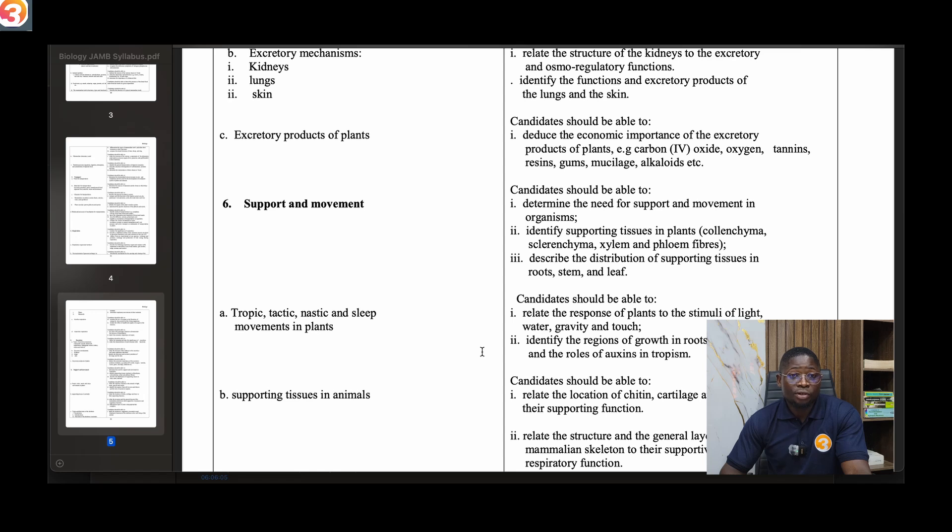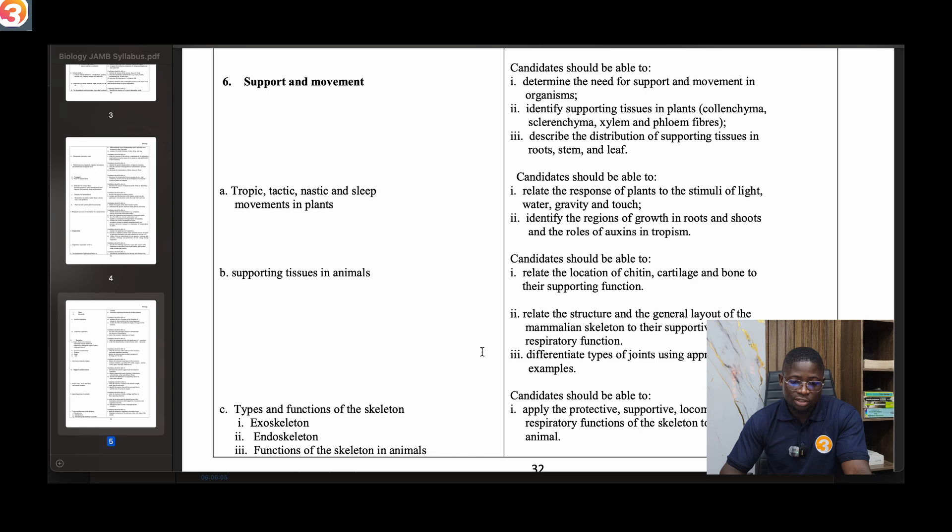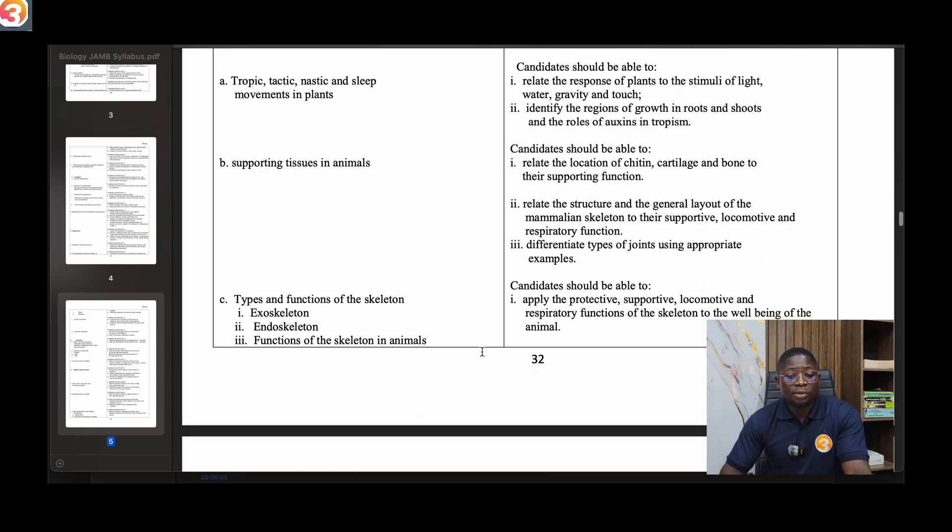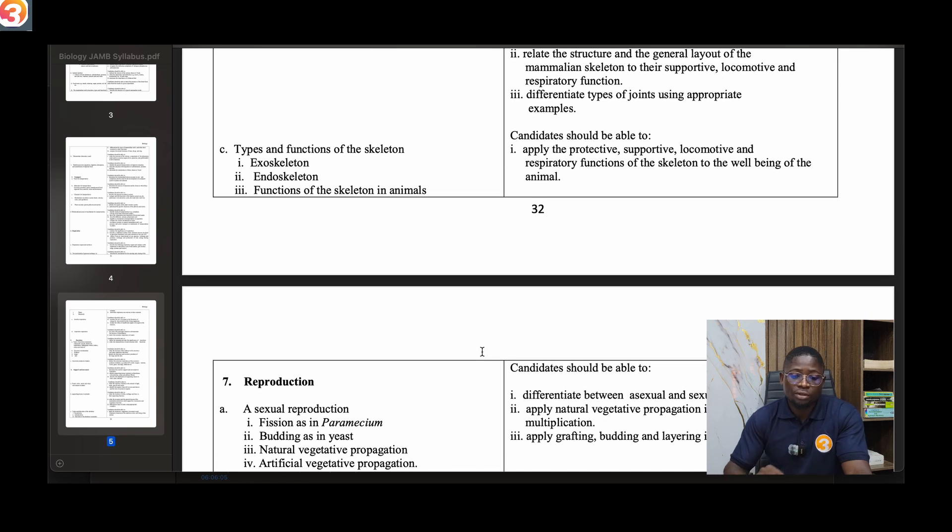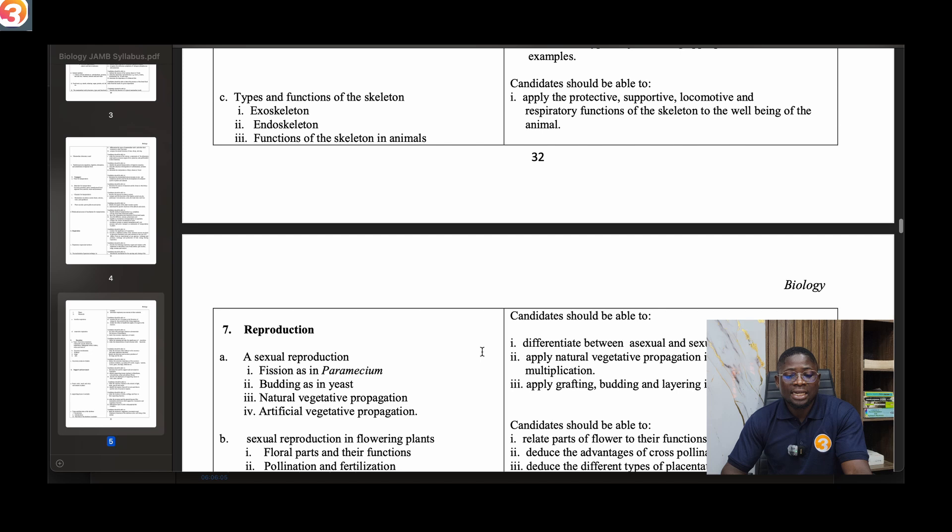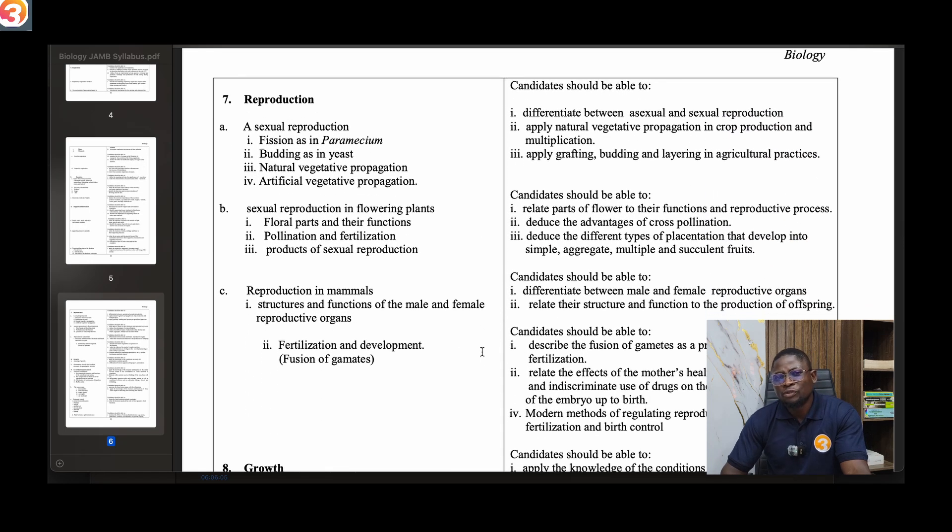Talk about excretory mechanisms giving the lung, skin, and then excretory products of plants. Number six talks about support and movement - tropic, tactic, nastic and sleep movements in plants, supporting tissues in animals. The C part is types and functions of the skeleton, exoskeleton and endoskeleton in animals. Number seven talks about reproduction, one of your best topics in class.